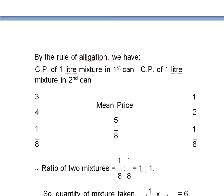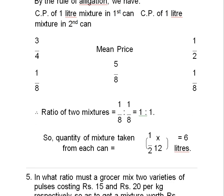Now by the rule of allegation, we have CP of one liter mixture in first can and CP of one liter mixture in second can will form the rule of allegation. By this, mean price will be always in the middle. So we can calculate the ratio of mixtures from here, that is 1/8:1/8, that is 1:1.